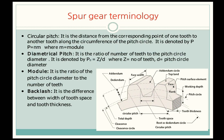The pitch circle is the imaginary circle shown by dotted lines in the figure. It is the circle where the two gears which are in contact or meshing have their pitch circles touching each other — that is called the pitch circle.